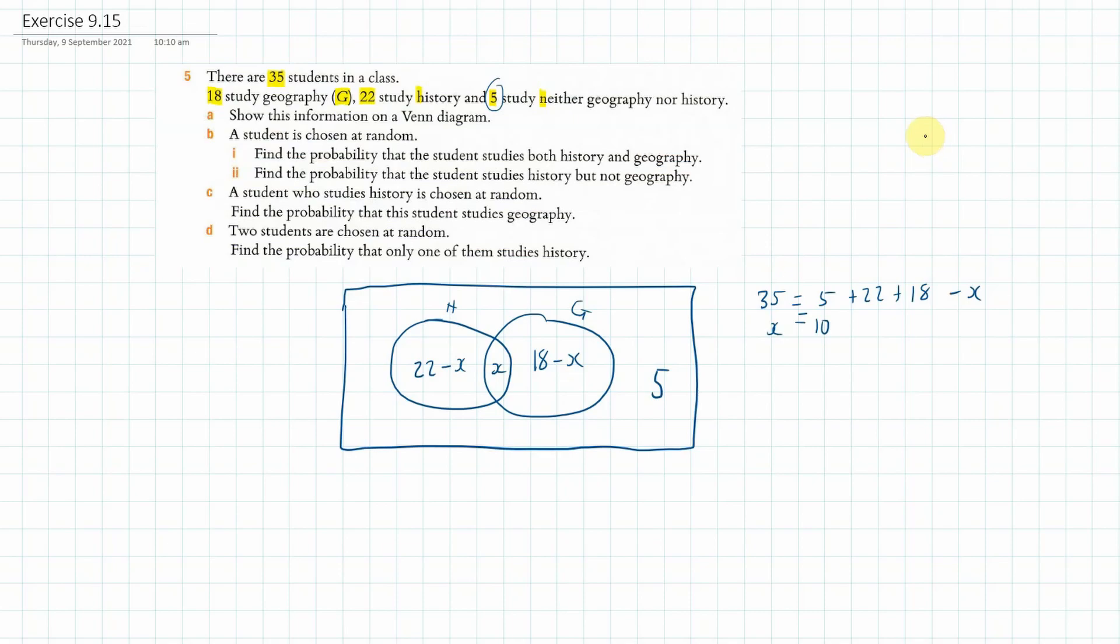And now we can go ahead and change a few things. So we've got a 10 in here. 18 minus 10 is 8. 22 minus 10 is 12. So that's our Venn diagram.